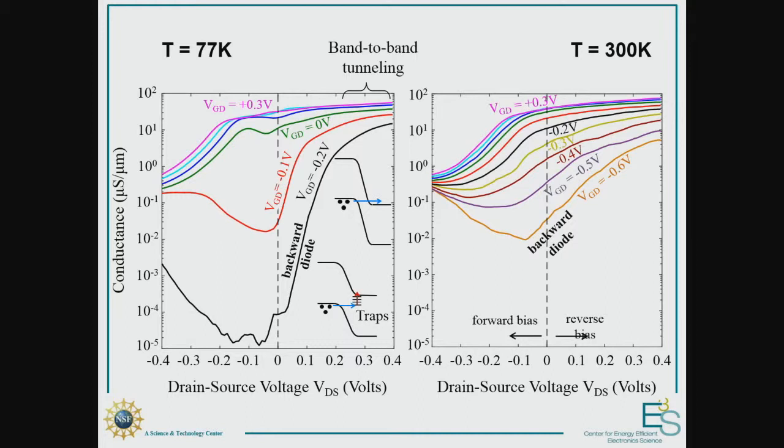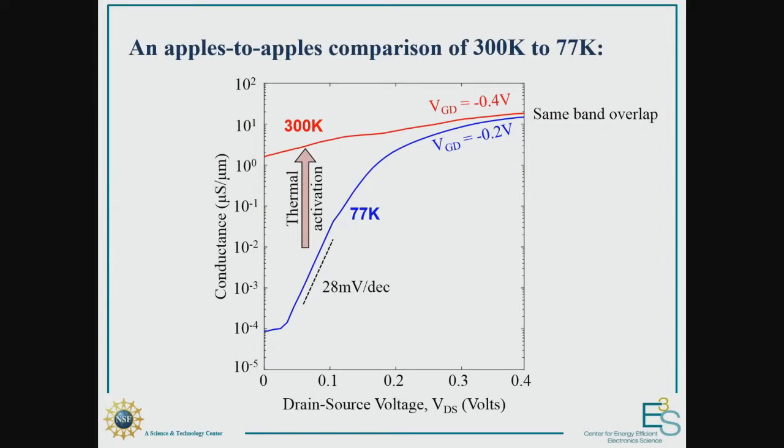But there's a very significant difference between 77K and 300K if we look at the backward diode. Of course, in the on state, it's band-to-band tunneling, but the subthreshold slope is dominated by what appears to be the Boltzmann factor because it's so temperature dependent. And to simplify our comparison between the response at these two temperatures, I've chosen two curves from the previous slide at these two temperatures. And I've chosen the gate voltages so that they have the same on state conductance, which is indicative of the same degree of band overlap in the on state.